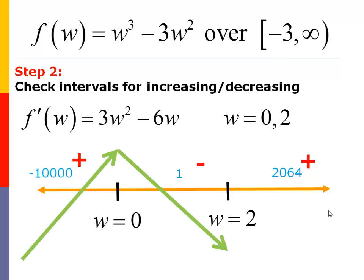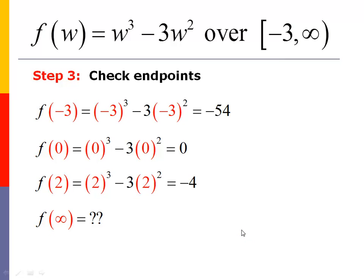Okay, so putting that together, what we have is that on the left section, the positive derivative means we're increasing. Negative derivative values means we're decreasing in the middle. And then we're back to being positive derivative, so we're increasing. So we're going to have a nice kind of cubic kind of shape to this graph with a maximum potentially here at 0 and a minimum here at 2.